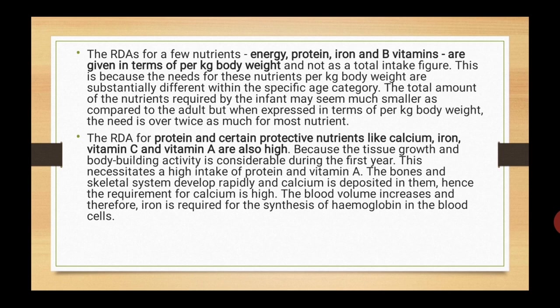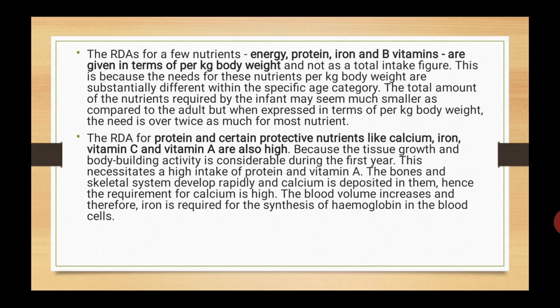Because the needs for these nutrients per kg body weight are substantially different within the specific age category. The total amount of nutrients required by the infant may seem much smaller as compared to the adult. But when expressed in terms of per kg body weight, the need is over twice as much for most nutrients. RDA for protein and certain protective nutrients like calcium, iron, vitamin C, and vitamin A are also high because tissue growth and body-building activity is considerable during the first year. For bones and skeletal system development, calcium is required. The blood volume increases and iron is required for the synthesis of hemoglobin in the blood cells.